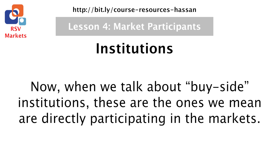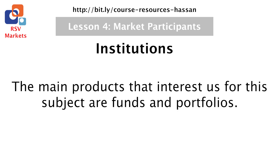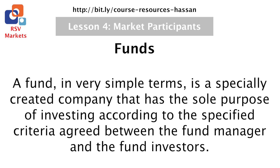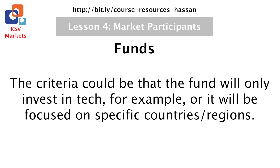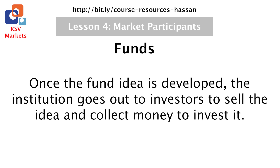When we talk about buy side institutions, these are the ones directly participating in the markets. Where do they get their money from? Buy side institutions create products which they can sell to the public, and they can then use this money for a specific purpose. The main products that interest us for this subject are funds and portfolios. A fund in very simple terms is a specially created company that has the sole purpose of investing according to specific criteria agreed between the fund manager and the fund investors — for example, investing only in tech, specific countries or regions, using a macro view, specific commodities, themes, and so on. Once the fund idea is developed, the institution goes out to investors to sell the idea and collect money to invest it.